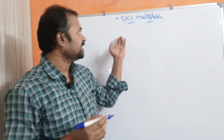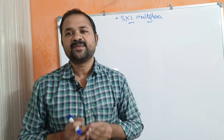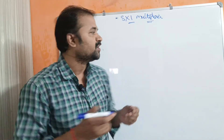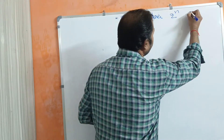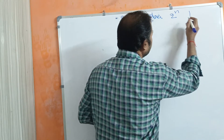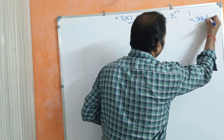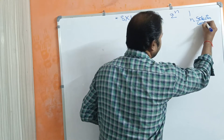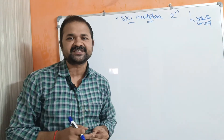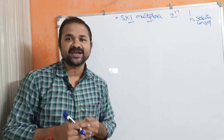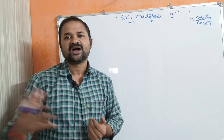Now let us discuss the 8 by 1 multiplexer. A multiplexer accepts 2 power n data input lines and produces only one output, and has n selection or control inputs. In this video we are going to discuss the block diagram of the 8 by 1 multiplexer, truth table, expression evaluation, and logical circuit.